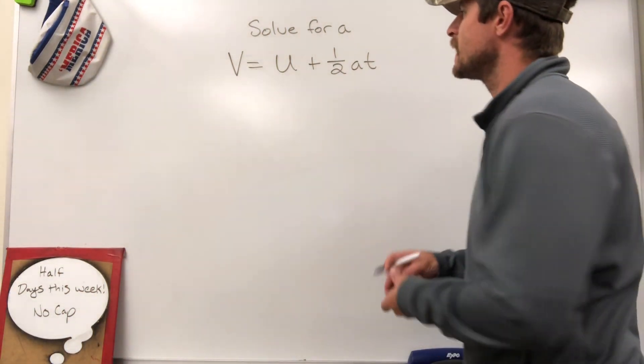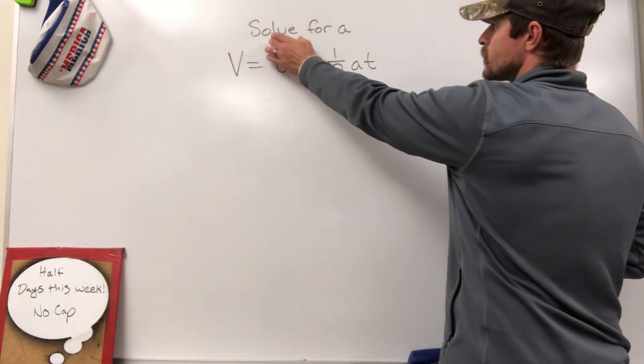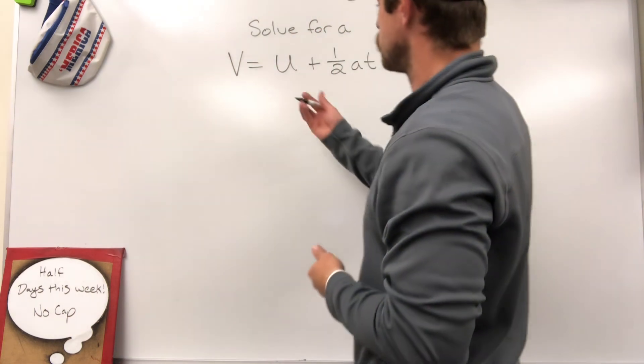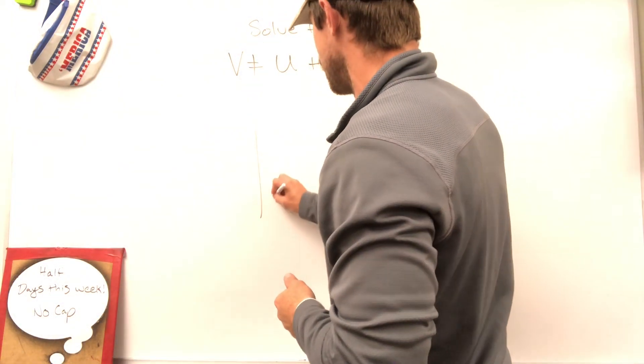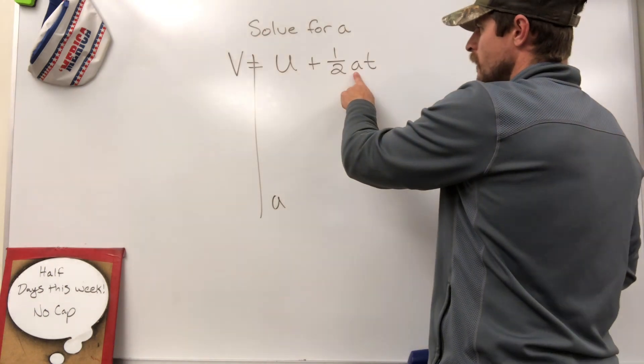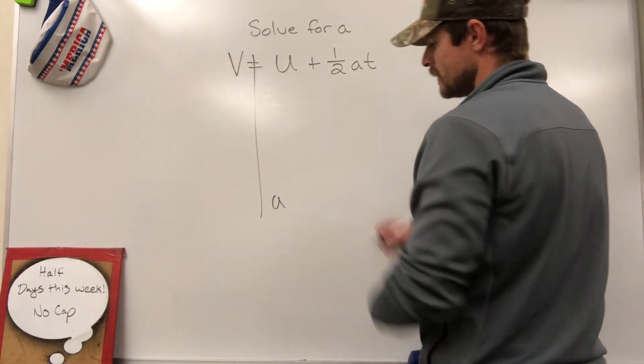In this video, I'm going to teach you how to take this literal equation and solve it for A. What we need to do is isolate A, make it the only part of the equation on the right side of the equal sign.